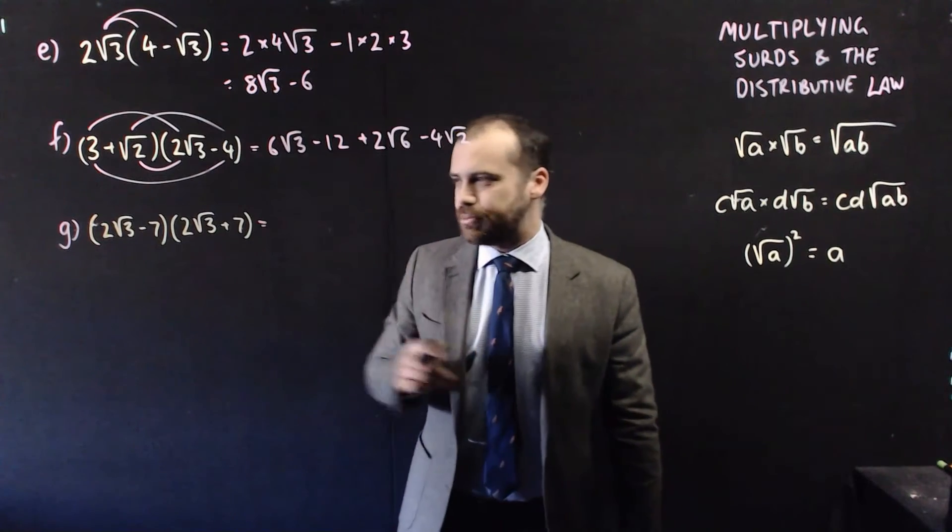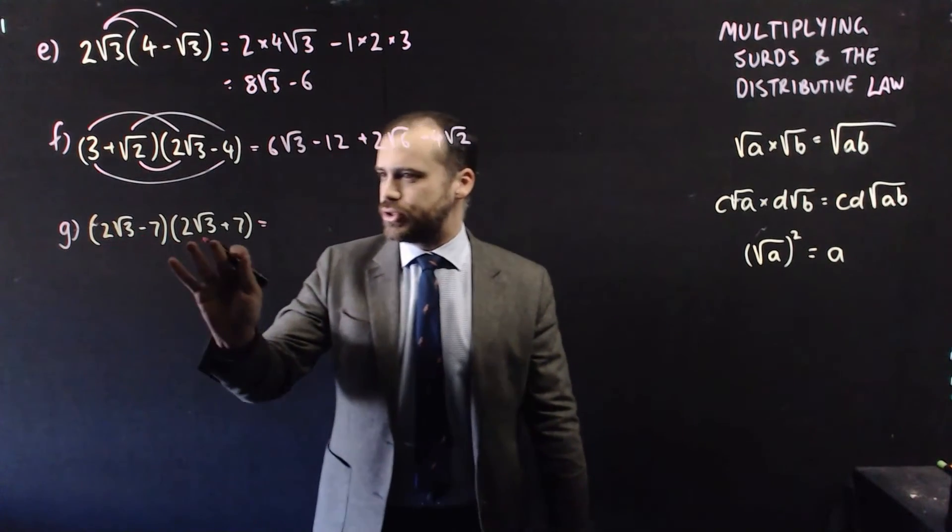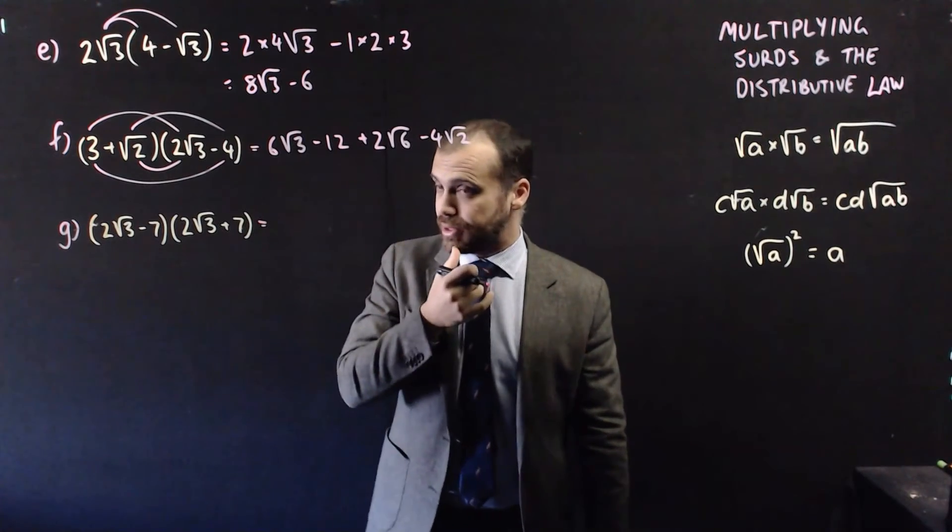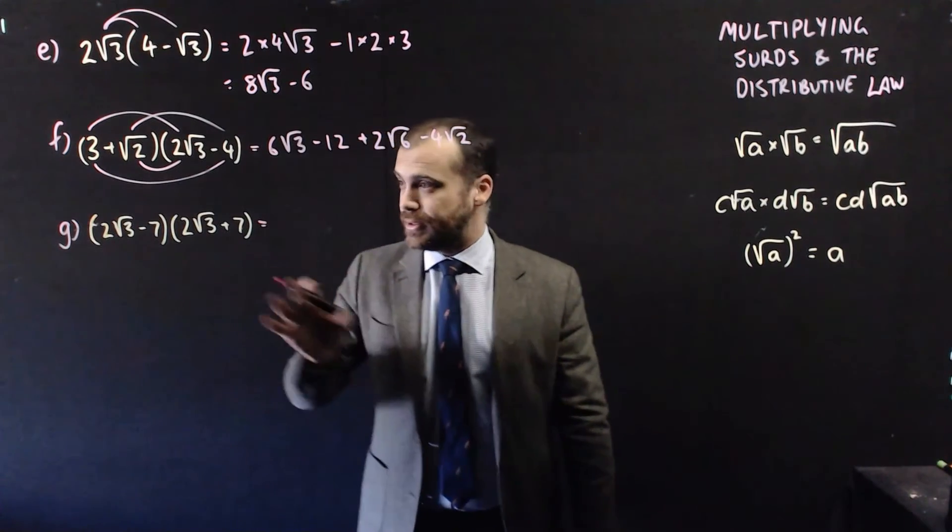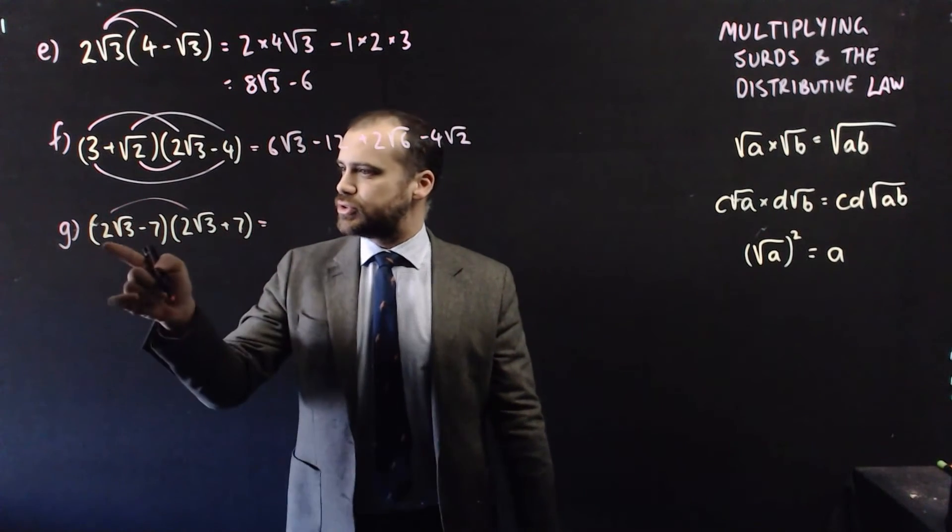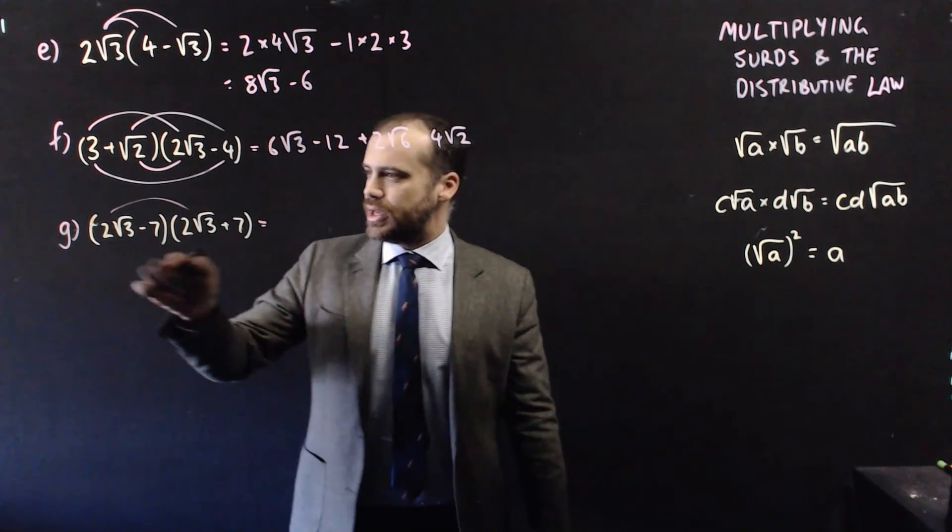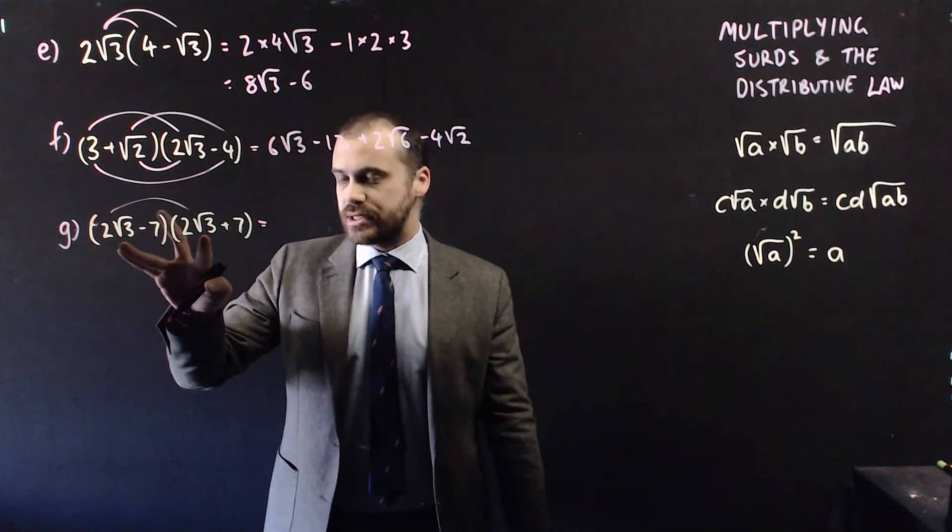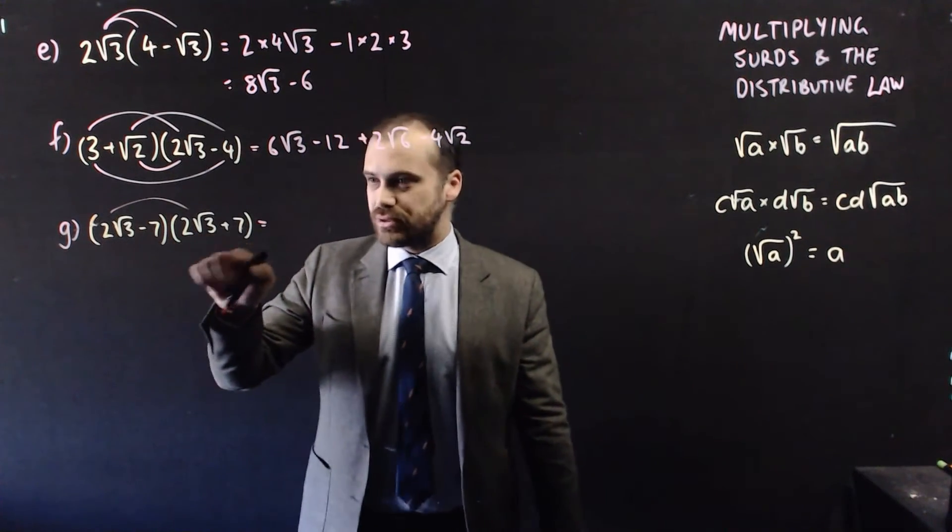Another double bracket here, but a special pattern. 2 root 3 minus 7, 2 root 3 plus 7. Some of you are looking at that, you already know what's going to happen. Some stuff's going to disappear. Let's do it anyway. First, 2 root 3 times 2 root 3 is going to be 4. But then that root 3 times root 3 is going to be a 3 as well. So 4 times 3 is 12.